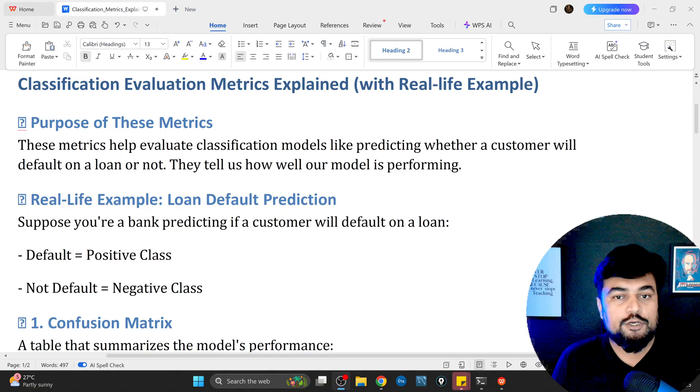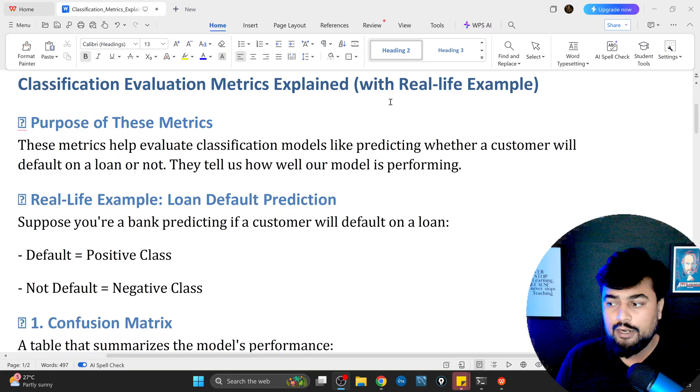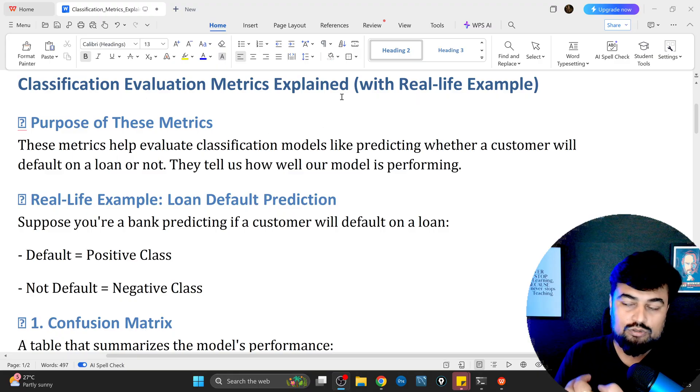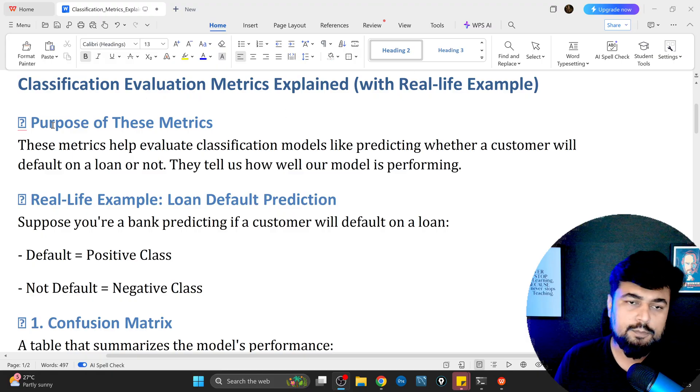In the previous video, I told you how to make a probability of default model. In today's video, we are going to talk about all these important aspects which you can see here. Now let's talk about all of them one-on-one. In this video I will be giving you this particular file which you can download from the GitHub repository. The link will be in the description box.